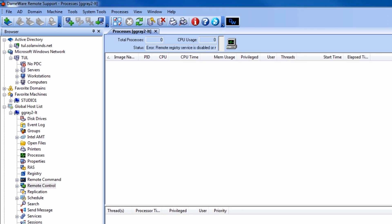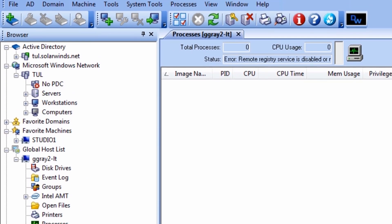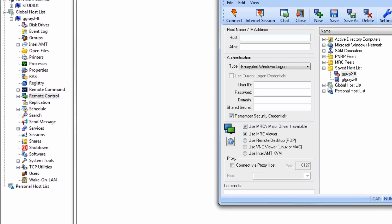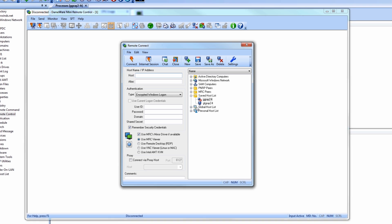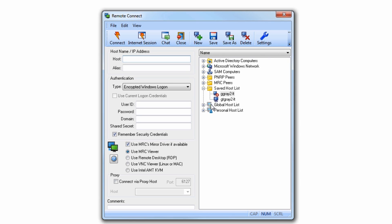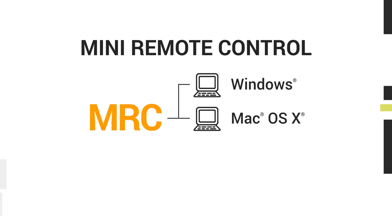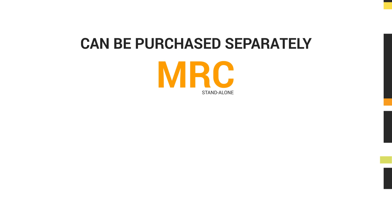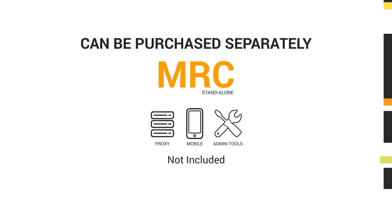Once you have successfully deployed DRS in your environment, you can begin using all the powerful systems administration tools accessible from the DRS software console. Let's begin by looking at Daymor Mini Remote Control, or MRC for short, which is included with every copy of DRS. MRC is an award-winning remote control and remote access tool that allows you to connect to Windows, Mac OS X, and Linux computers all from the same console. MRC can be purchased separately from DRS, but it does not include the Daymor Internet Proxy for outside-of-firewall connections, the Daymor Mobile Gateway for iOS and Android connections, or the other systems administration tools we'll be covering in just a moment.